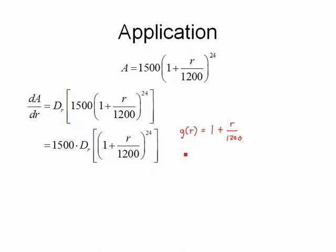That means my outside function, f of r, so I'm going to use the same variable, is going to be r to the 24th. When I put g in place of r, it gives me the quantity that I'm taking the derivative of.